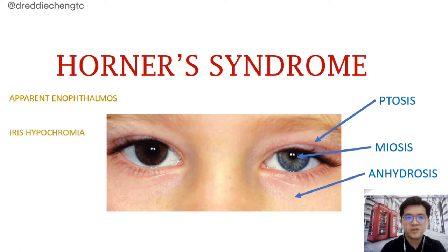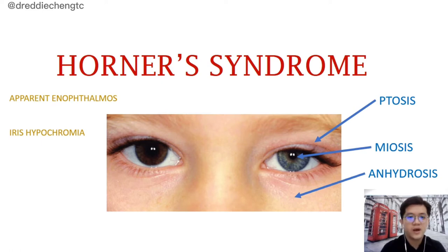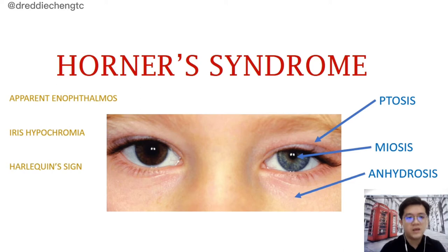Besides that, a patient can have iris hypochromia because of a congenital or long-standing Horner's Syndrome. This gives rise to heterochromia, which means a different colour of the iris in both eyes. In babies, we can see a harlequin sign in which when they are crying, they will have flushing over the contralateral side, but the ipsilateral side will appear pale.